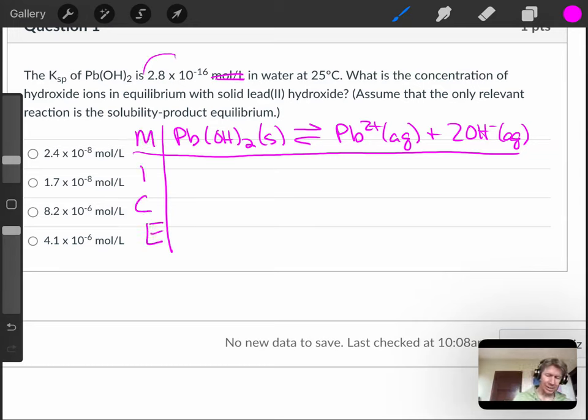You can see that the value of Ksp is so small, this reaction doesn't go to completion. That's another hint that you're doing a molarity ICE table. Those all go together to tell you this is a molarity ICE table.